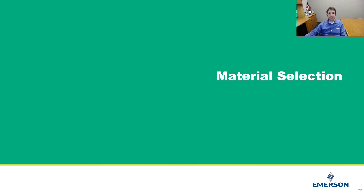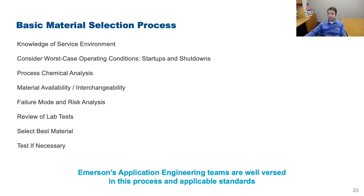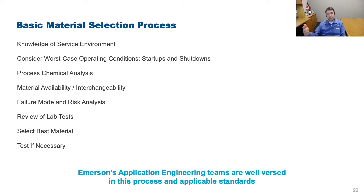Material selection will greatly depend on the application and the stakeholders involved. Process conditions must always be taken into account, and the system must be designed to withstand worst-case operating conditions with a safety factor applied. Sometimes chemical analysis, lab testing, or risk analysis may be required. There may also be multiple materials suitable for the same application, but they may vary in cost and availability. Our inside sales engineers at Emerson are well aware of these requirements and can help customers and channel partners navigate this process.